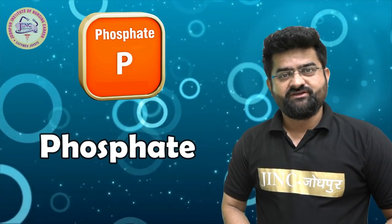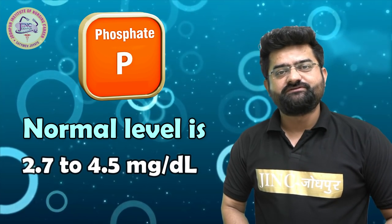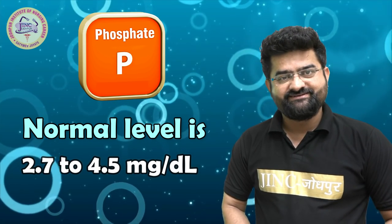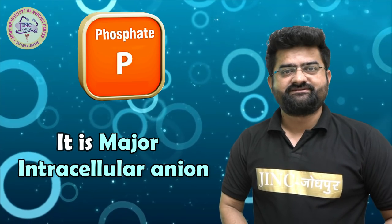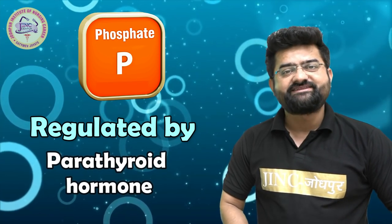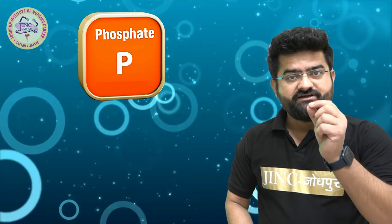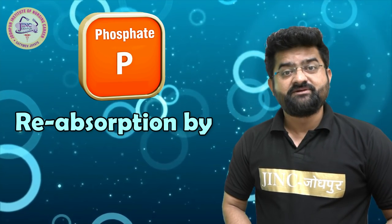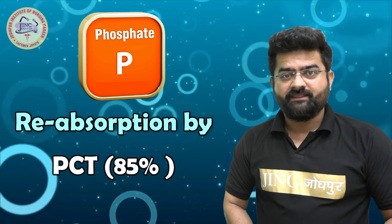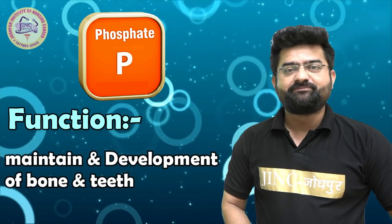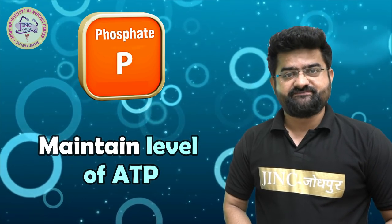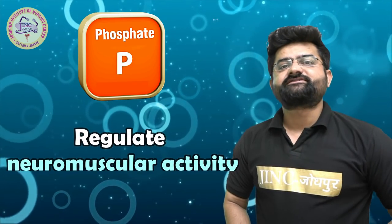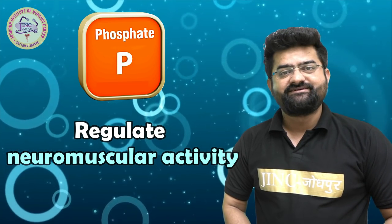Phosphate normal level is 2.7 to 4.5 mg per dL. It is a major intracellular anion, regulated by parathyroid hormone, and reabsorbed by the PCT. Its main functions include maintaining and development of bone and teeth, maintaining the level of ATP, and regulating neuromuscular activity.